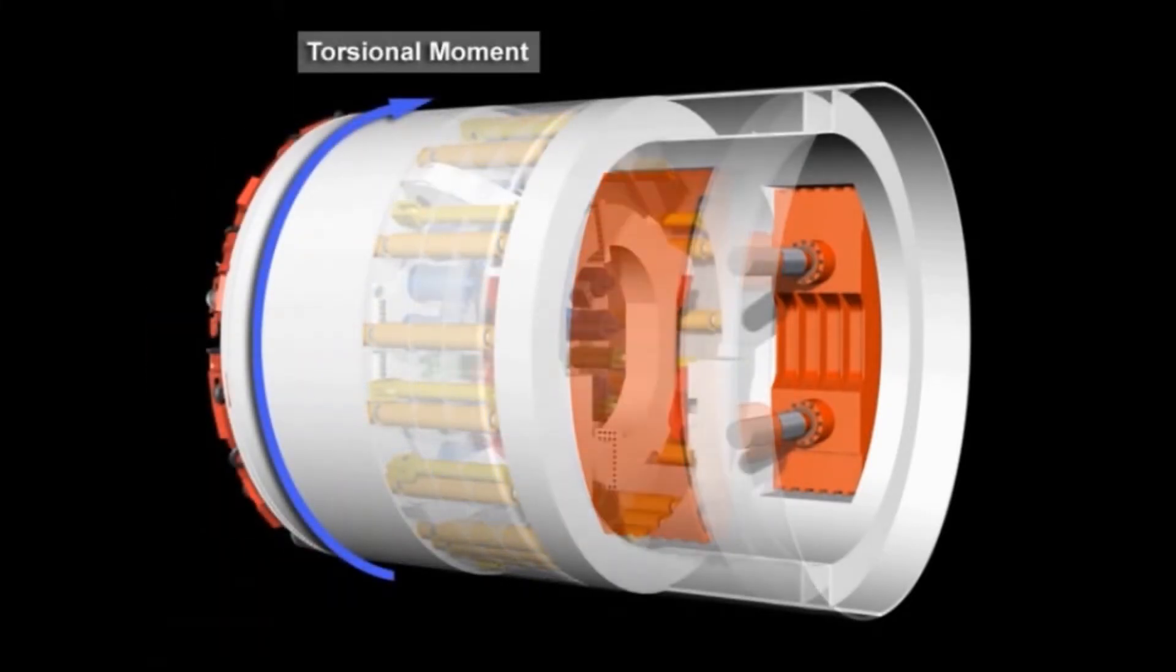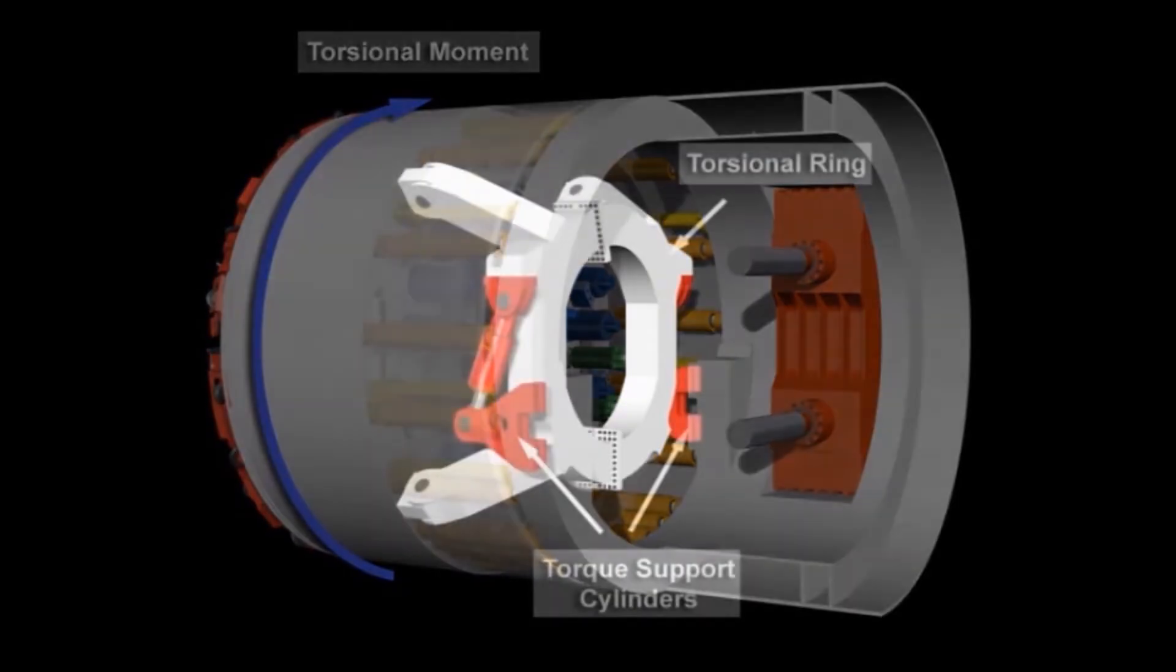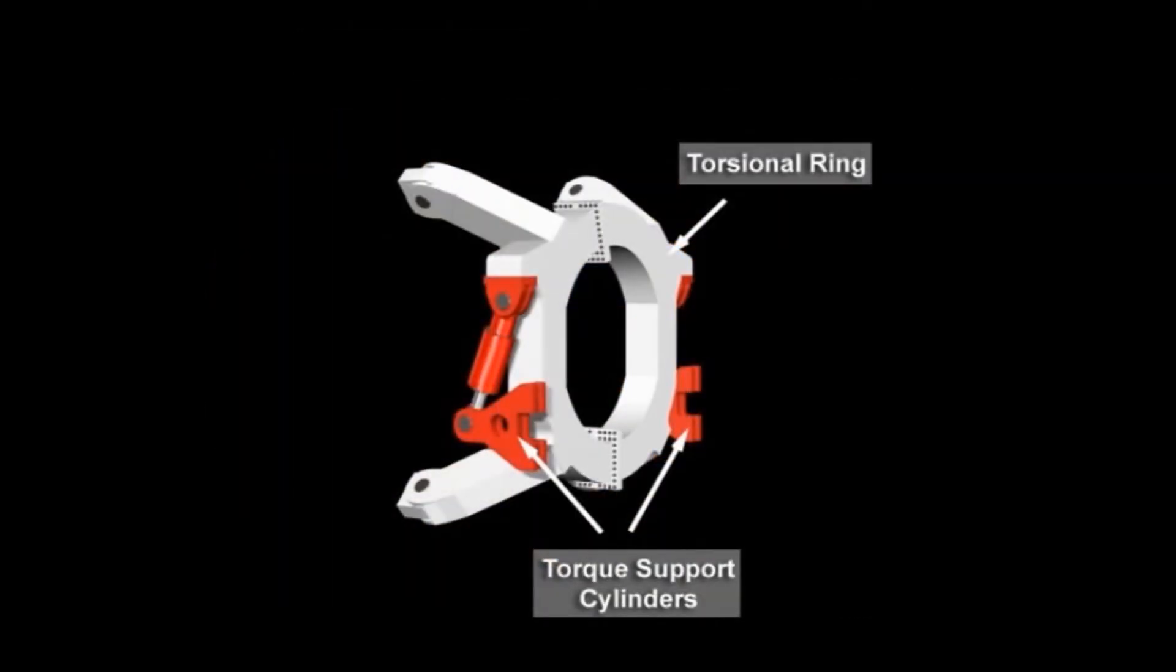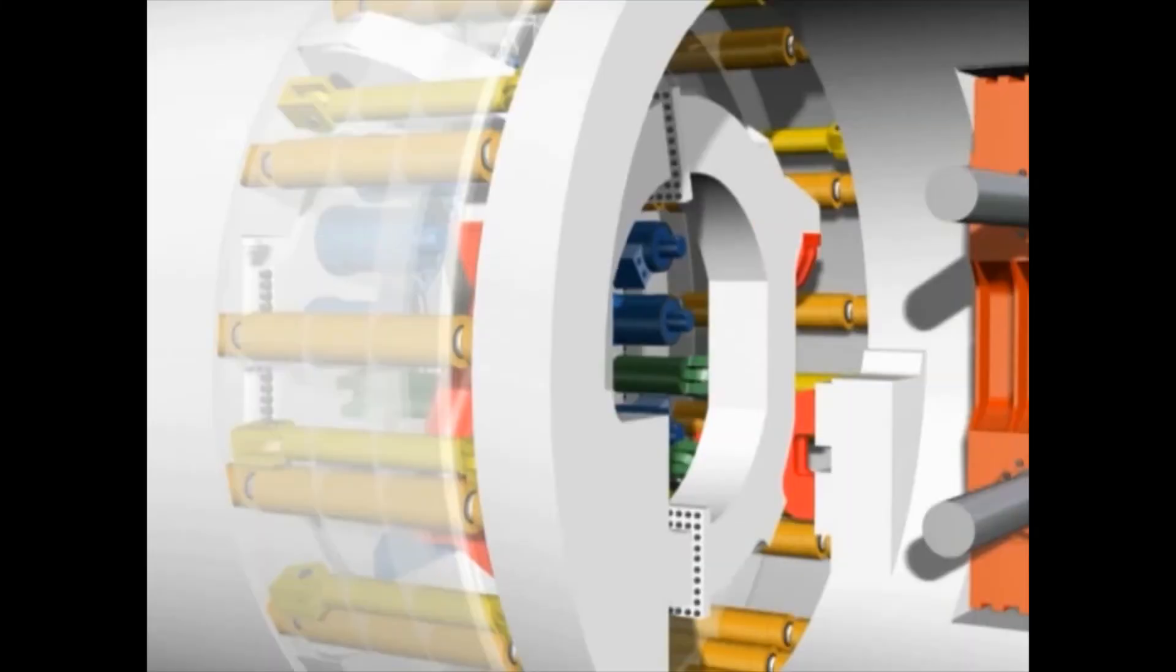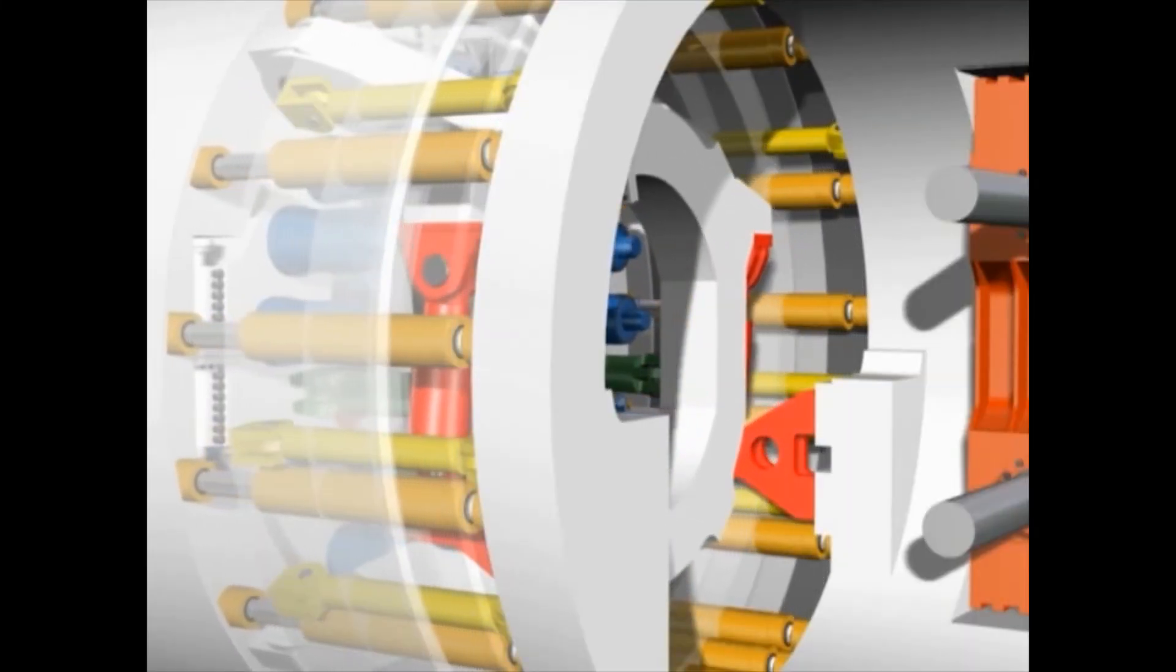The torsional moments developing from the tunneling excavation are transferred into the steel structure of the gripper shield via the torsional ring and two torque support cylinders. The torque support cylinders compensate the relative motion between front and gripper shield.